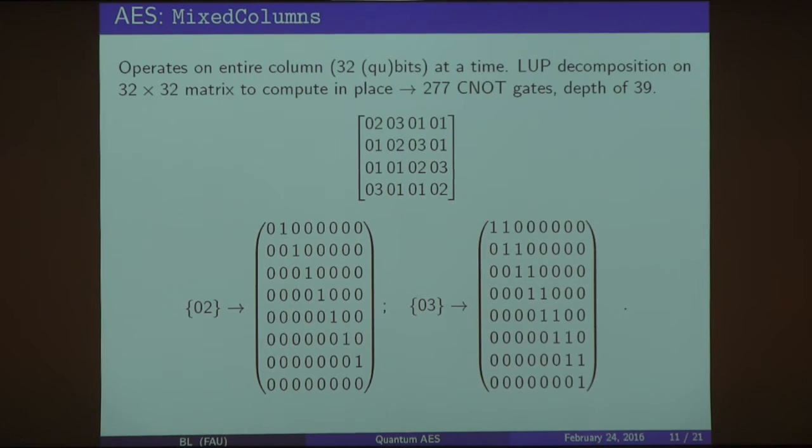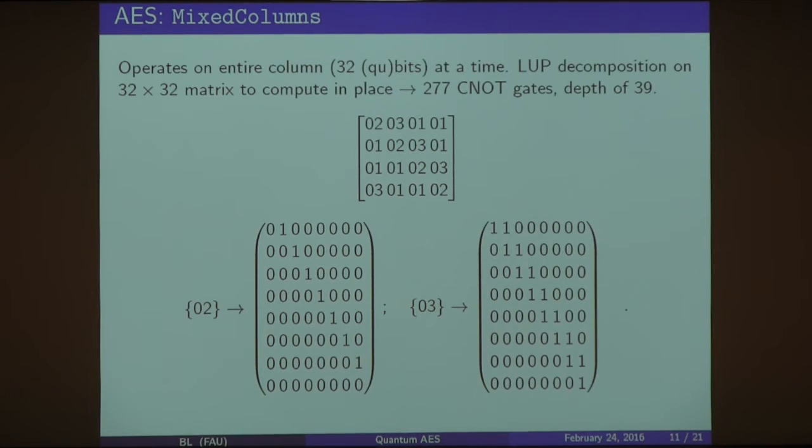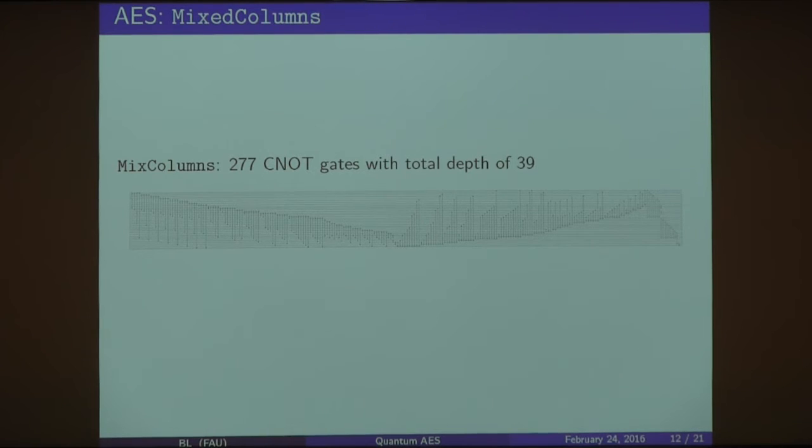The next operation for AES is this MixedColumns, which affects an entire column, or 32 bits at one time. It uses this 32 by 32 matrix. Each one of these numbers - the 01 represents the eight by eight identity matrix, the 02 represents this eight by eight matrix, and 03 is represented by this matrix here. Putting that all together makes this a big 32 by 32 matrix. Again, that's just a linear operation, which we can compute with the LUP decomposition. Computing it in place required 277 CNOT gates, which took a total depth of 39. Again, depth is how many cycles it would take to complete.